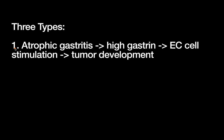The first type is driven by gastrin, and it starts with atrophic gastritis — an end-stage clinical entity when the stomach has been inflamed for a long time. This inflammation leads to atrophy: the stomach atrophies and loses a lot of its function, especially that of its secreting glandular cells. In this state, the stomach is secreting relatively little acid.